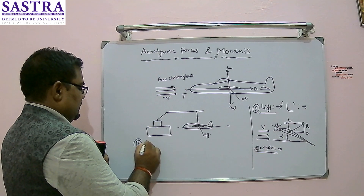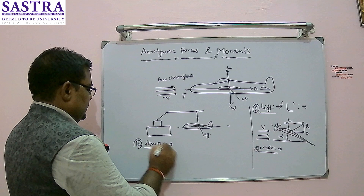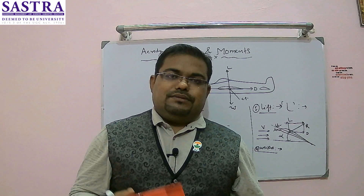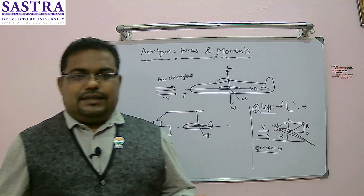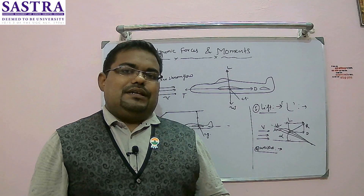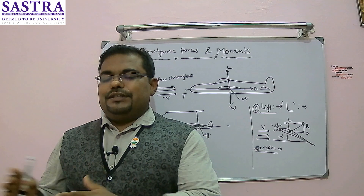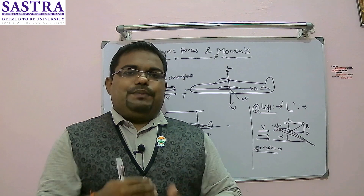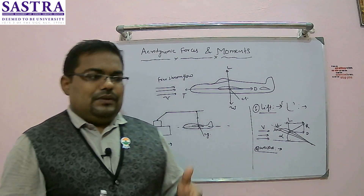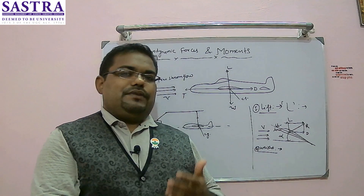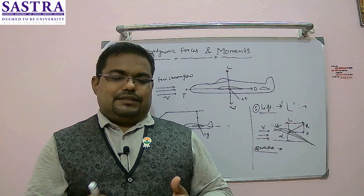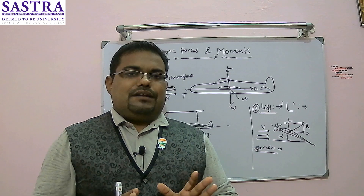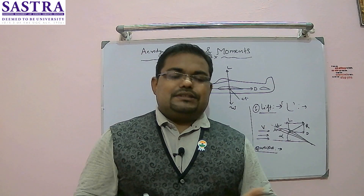Next is thrust. Thrust is generated by the engine, which may be propeller-driven or a turbojet engine. Thrust is generated when high-temperature gases are expelled through a nozzle at very high speed. As per Newton's third law of motion, this generates thrust. For propellers, they are designed to push a larger mass flow rate of air at higher speed, generating momentum thrust. So thrust is generated by the engine and propels the aircraft through the air.